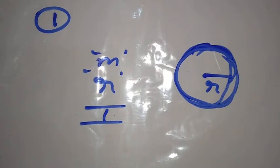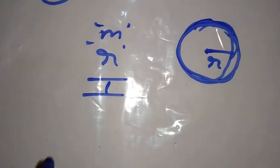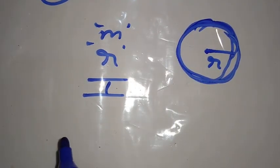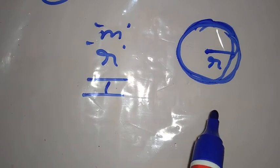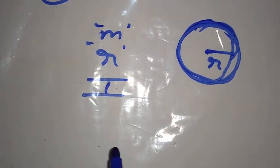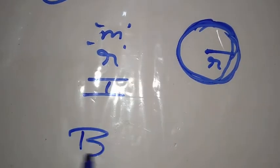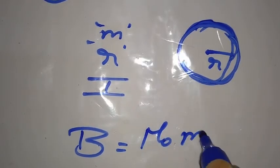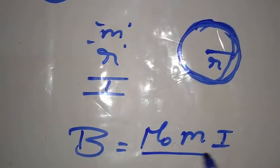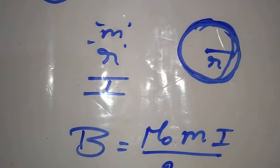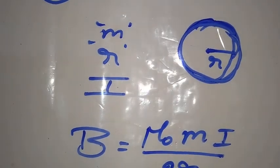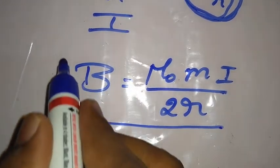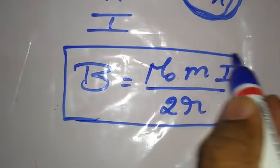My students, we already know that the standard formula is there. The magnetic field at the center of the circular coil having n number of turns and a current which flows through the circular coil is given by B equals mu naught m i divided by 2r. This is the standard expression.